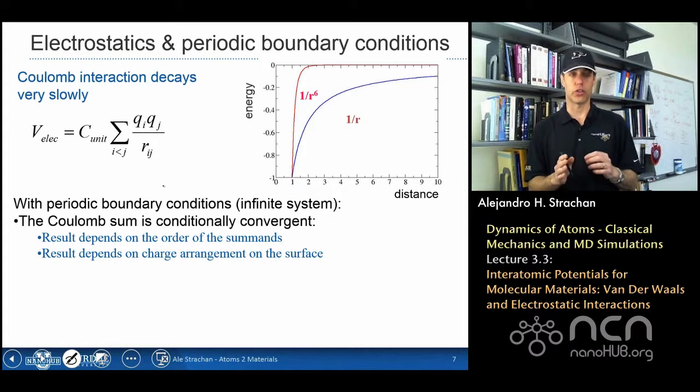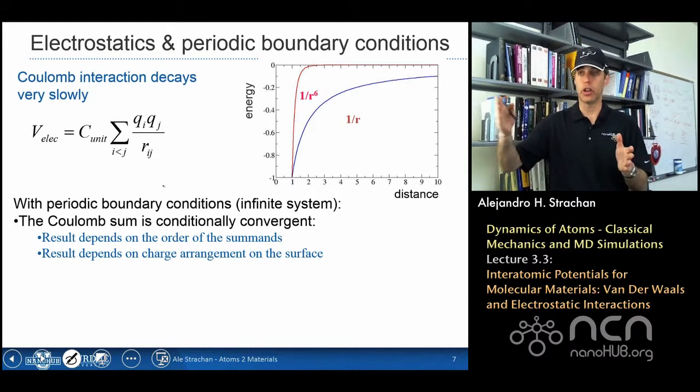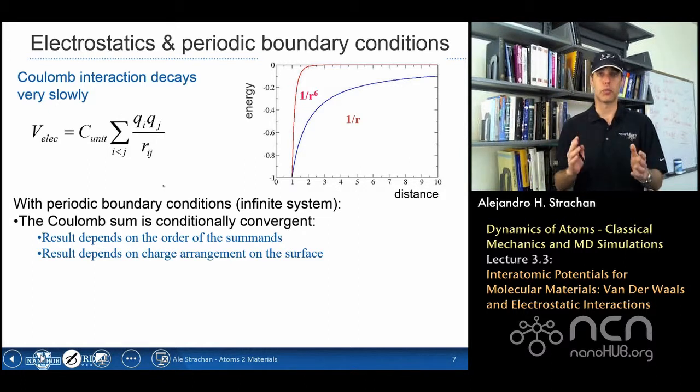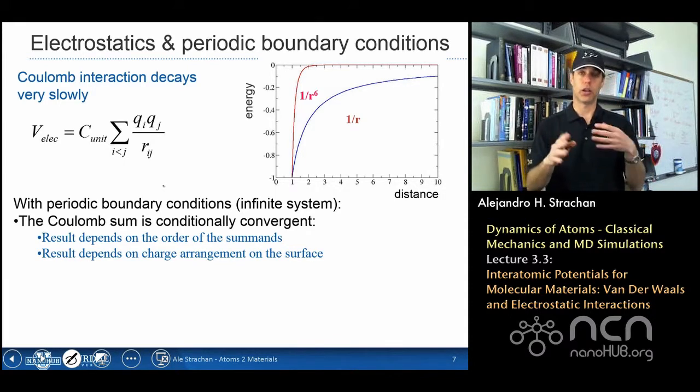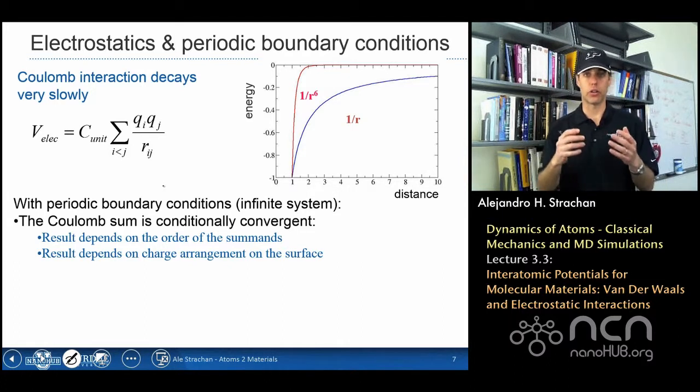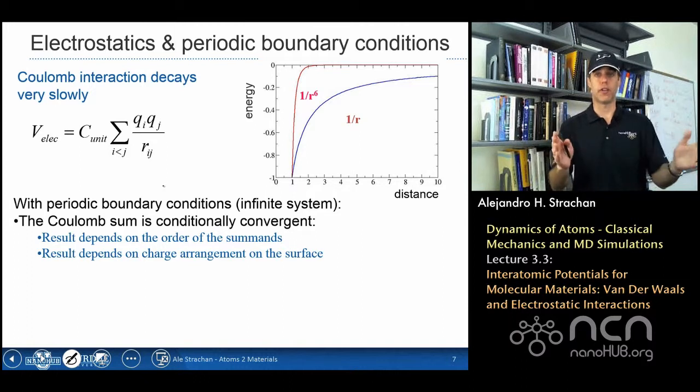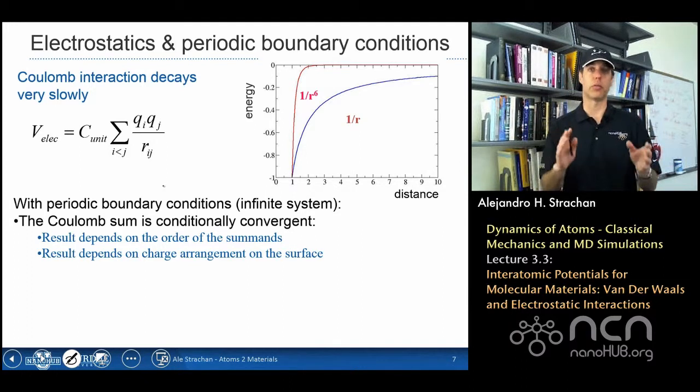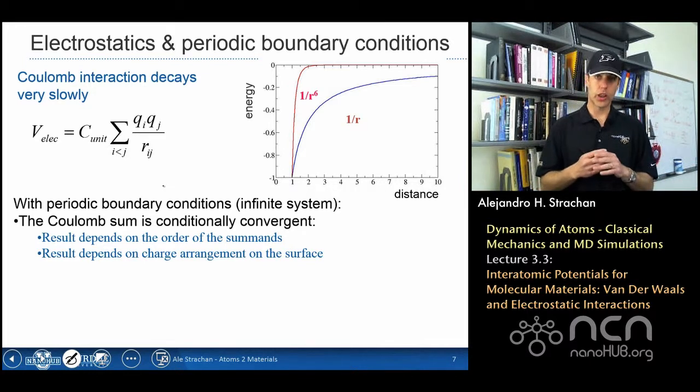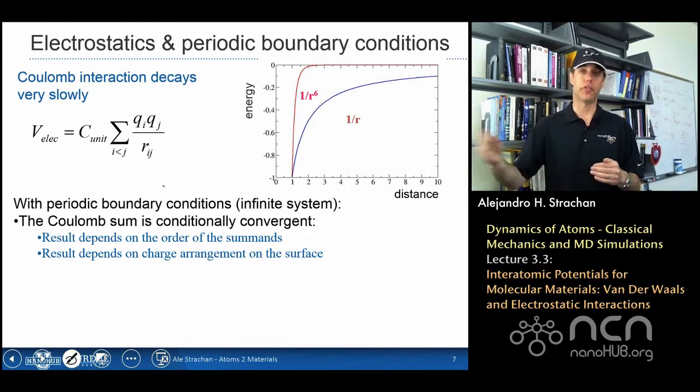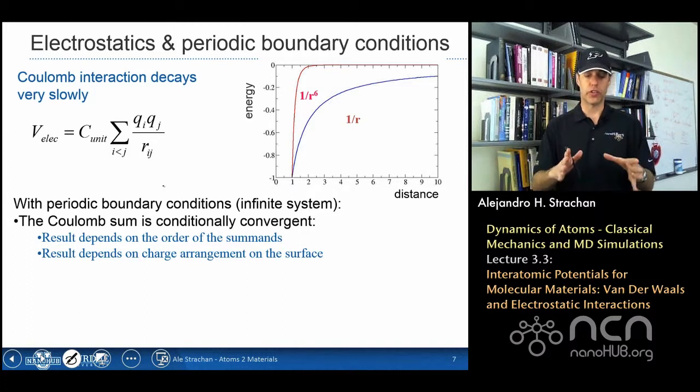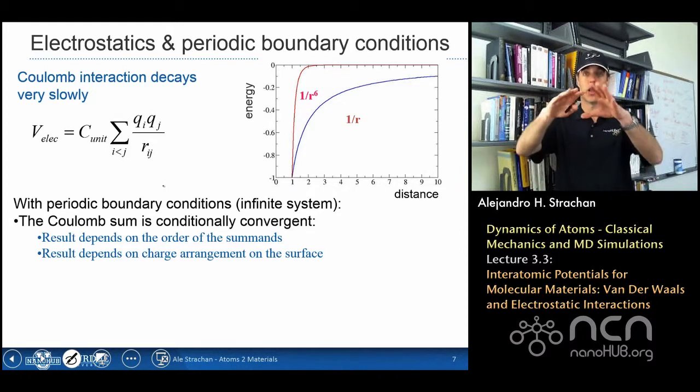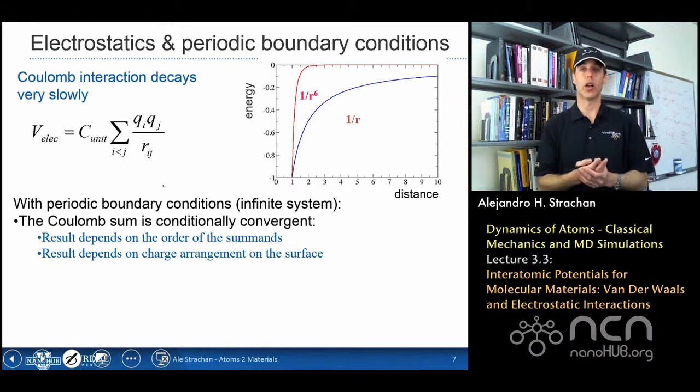What that means is that the result of this infinite sum of adding all of these interactions is dependent on the order in which you put the terms in the sum. And that's hard to wrap your mind around often because obviously in finite sums the order of the summands doesn't really affect the sum. In these infinite sums, in this infinite series, that's not the case.